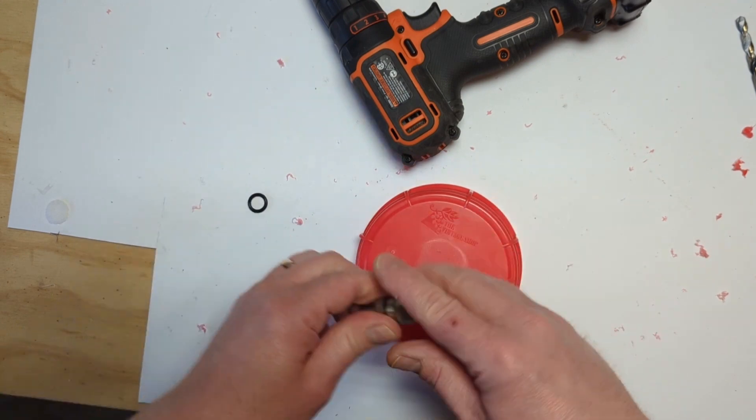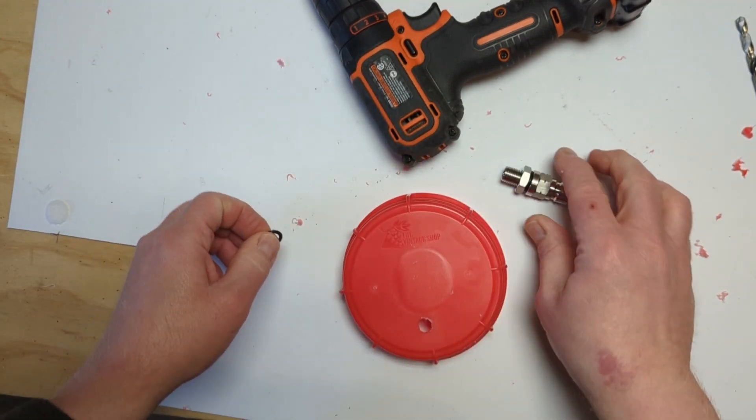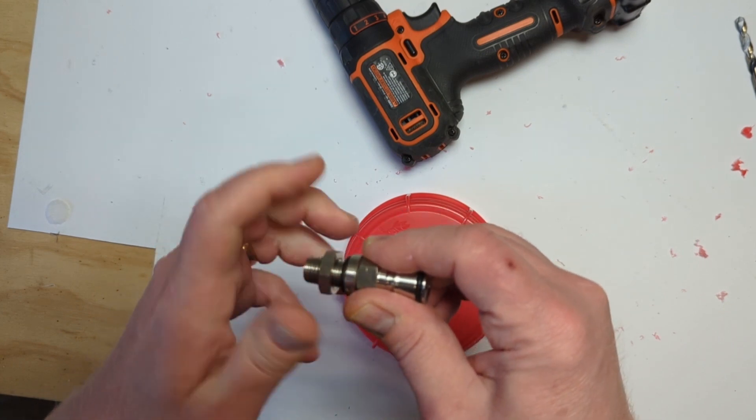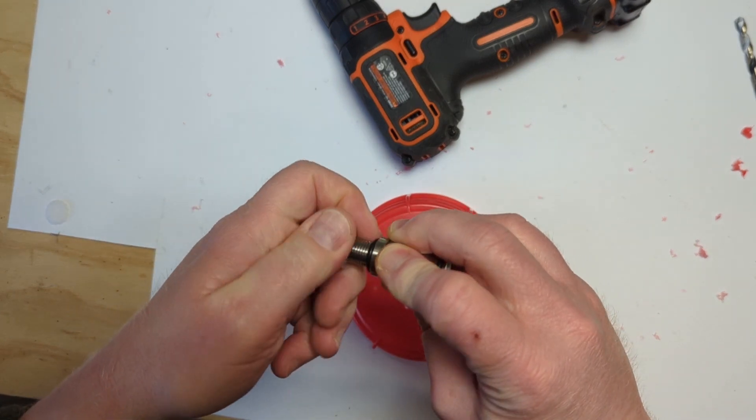With that in place, the idea then is you screw this through, which, yeah, I'm going to need a bigger hole. We'll redo that in a second. And then you basically tighten it up underneath.